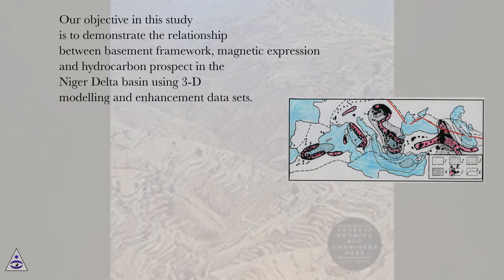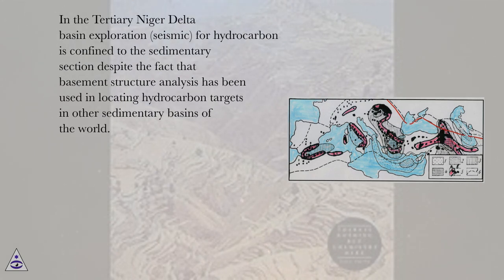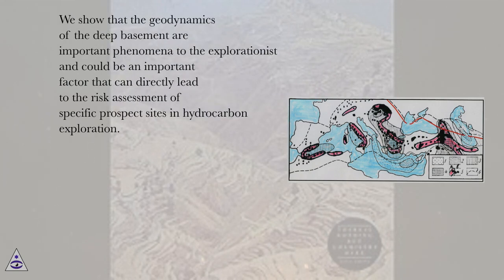Our objective in this study is to demonstrate the relationship between basement framework, magnetic expression and hydrocarbon prospect in the Niger Delta Basin using 3D modeling and enhancement data sets. In the tertiary Niger Delta Basin, exploration for hydrocarbon is confined to the sedimentary section, despite the fact that basement structure analysis has been used in locating hydrocarbon targets in other sedimentary basins of the world. We show that the geodynamics of the deep basement are important phenomena to the explorationist and could be an important factor that can directly lead to the risk assessment of specific prospect sites in hydrocarbon exploration.